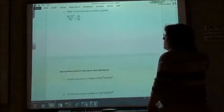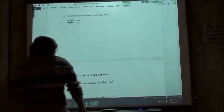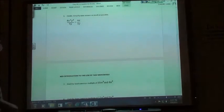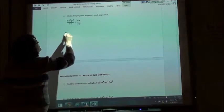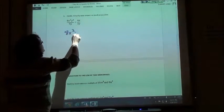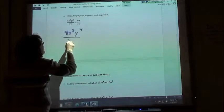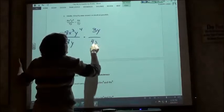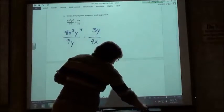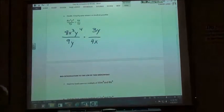So, number 6. What should I do with number 6? 3y over 4x. So, 8x cubed y to the 4th over 9y times 3y over 4x. Multiply by our reciprocal, and so we can do what?